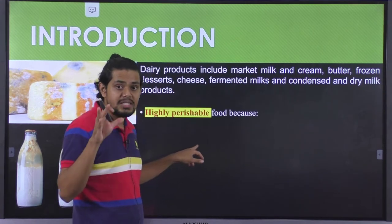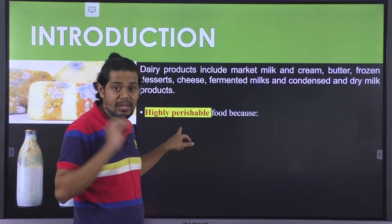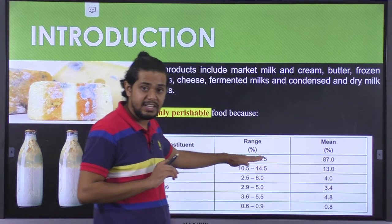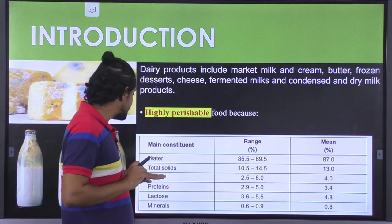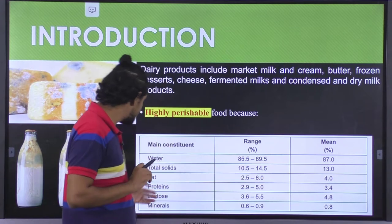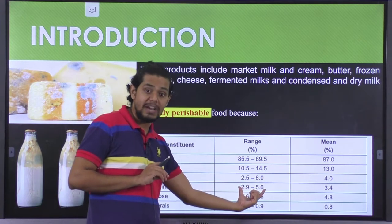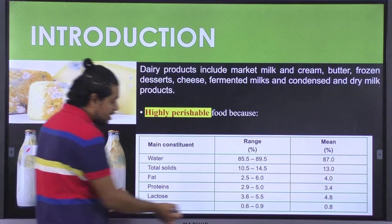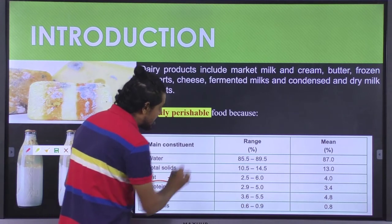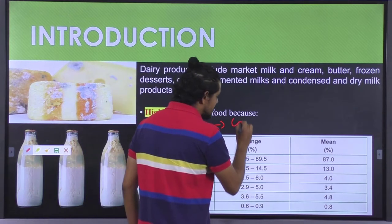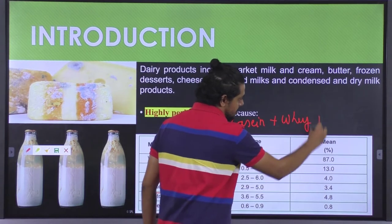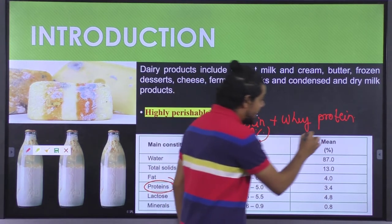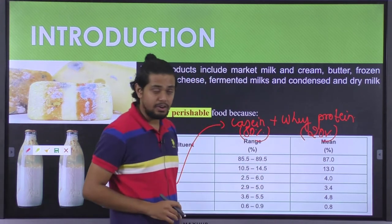Let us have an understanding of the compositional variation existing in milk. The maximum content is shared by water, ranging anywhere between 85.5 to 89.5 percent, followed by fat content which ranges between 2.5 to 6 percent, protein content 2.9 to 5 percent, lactose content 3.6 to 5.5 percent, and mineral content ranging between 0.6 to 0.9 percent. In case of milk, the chief protein is casein plus whey protein. Casein contributes about 80 percent of the total protein while whey protein constitutes about 24 percent.